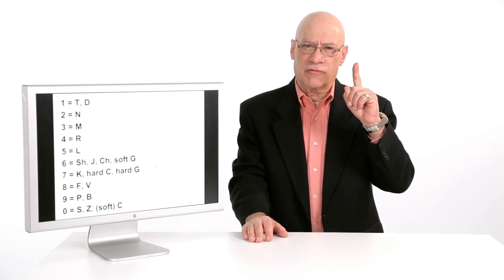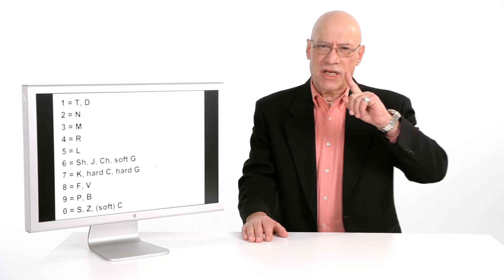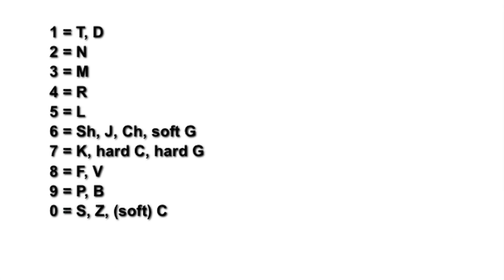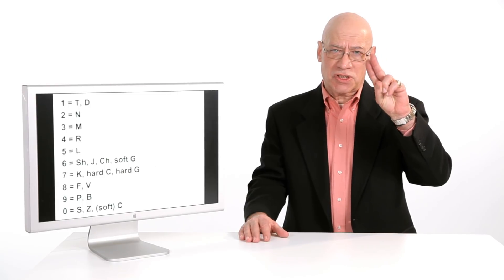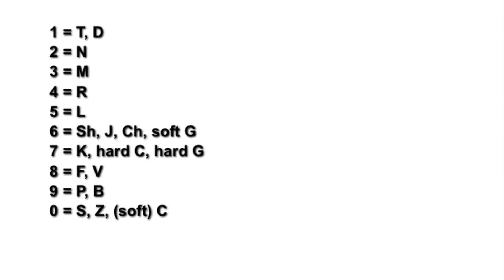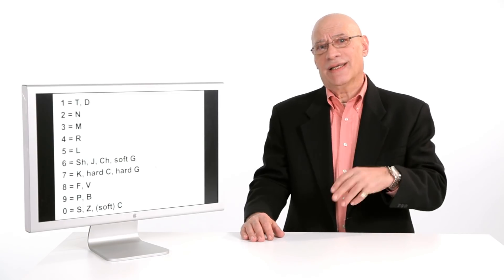So let me just briefly show you what the sounds are, and then I'll give you one or two examples. The consonant sound for the number one is either the sound of the letter T or the sound of the letter D. The sound of the number two is the sound of the letter N. It's not the letter N, it's the sound of the letter N.